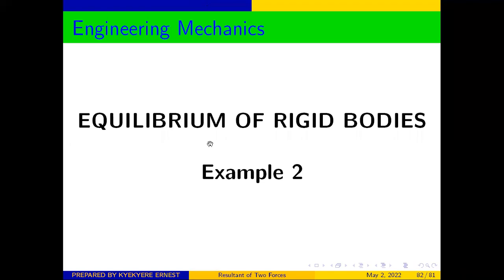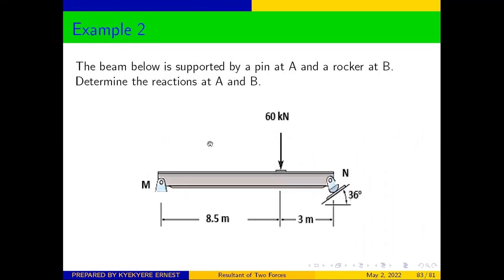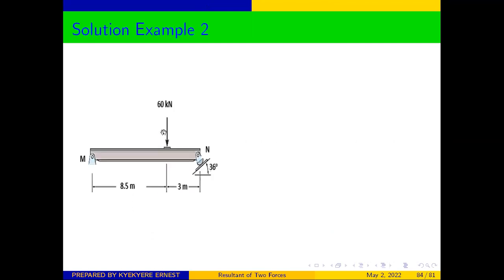The beam below is supported by a pin at A and a rocker at B. Determine the reactions at A and B. Good, so let's see how to solve.